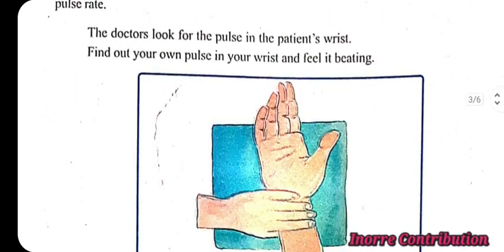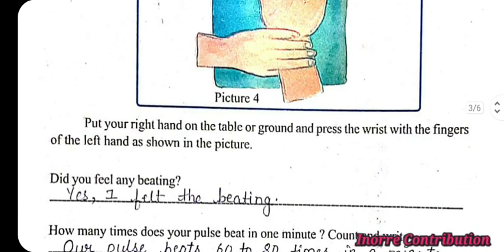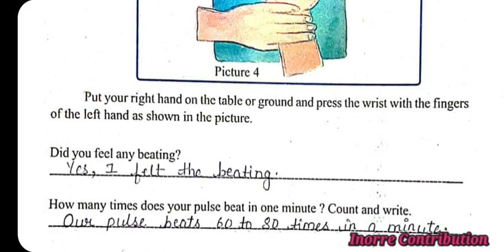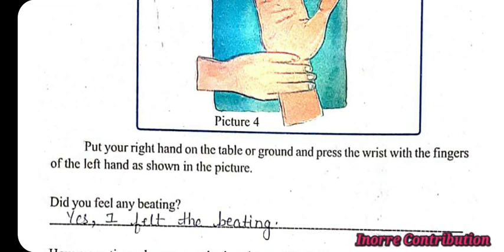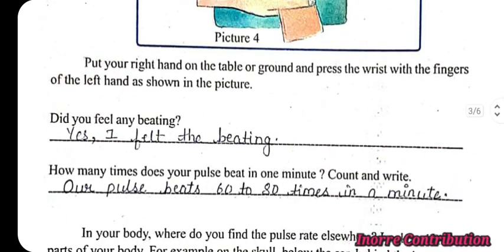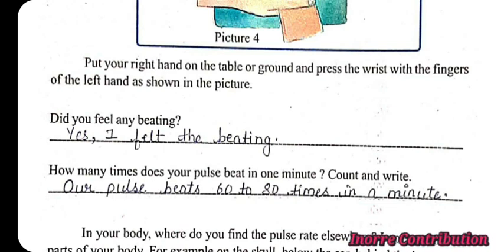Pulse Rate. Put your right hand on the table or ground and press the wrist with the fingers of the left hand, as shown in the picture. Did you feel any beating? Yes, I felt the beating. How many times does your pulse beat in 1 minute? Count and write. Our pulse beats 60 to 80 times in a minute.